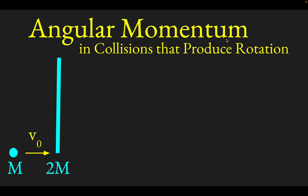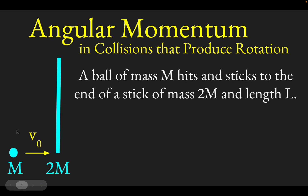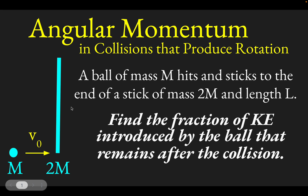This is a situation in which a collision produces a rotation. This covers a lot of the ideas in mechanics and pulls a bunch of them together. What's happening is we have a ball of mass M that's going to hit and stick to the end of a long stick that has mass 2M and length L. We're going to find what fraction of the kinetic energy the ball brought in will remain in the system after the collision.